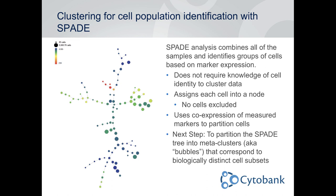After exploratory data analysis, the next step is identifying cell populations through clustering. One tool for this is SPADE. SPADE combines all of your samples and identifies groups or populations of cells based on marker expression, using the co-expression of whatever markers you specify to partition your cells. This doesn't require any prior knowledge of cell identity — you can say: partition my data using these markers I've measured.